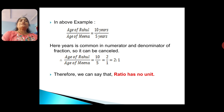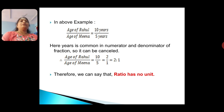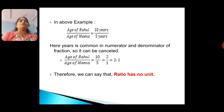Value of all above ratios are equal. Therefore, these ratios are called equivalent ratios — ratios having equal least values are called equivalent ratios. In the above example, age of Rahul divided by age of Mina equals 10 by 5. Here, 'years' is common in the numerator and denominator, so it can be cancelled. Therefore, age of Rahul divided by age of Mina equals 10 by 5, least form 2 by 1, that means 2 ratio 1. Therefore, we can say that ratio has no unit.